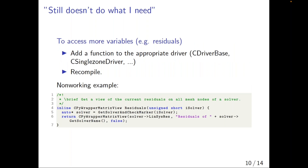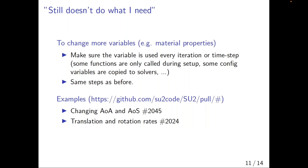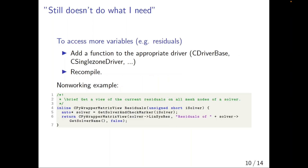I'm sure it still doesn't do everything everyone needs. If you want to access more variables, that's the simplest thing you can do — you just need to add a function on the C++ side to the appropriate driver: C driver base, single zone driver, or whatever. Then you recompile everything and your new function should show up in Python. You need to make sure the SWIG stuff also gets refreshed, but that's the only caveat.